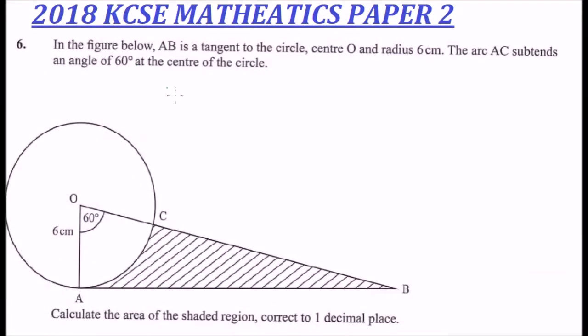This is 2018 KCSE Mathematics Paper 2, question number 6, where we are told in the figure below AB is a tangent to a circle, so this is our tangent AB, center O, and radius 6 centimeters.